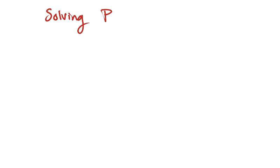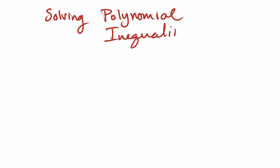This video is going to be on solving polynomial inequalities. When you want to solve a linear inequality, the only rule you've got to remember is that if you multiply or divide by a negative, then you flip the sign.